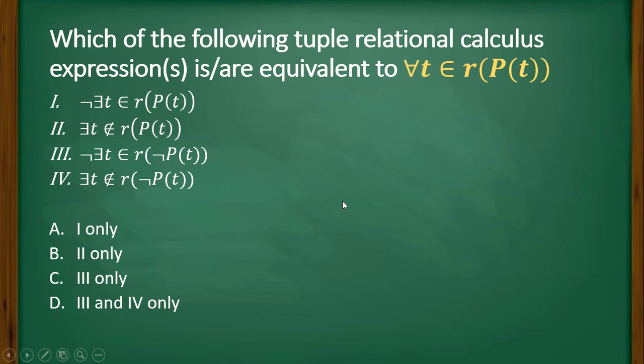the question paper again. For all t belongs to r, predicate... So first one is saying that for no t our predicate is true, so these two things are not the same. Here,